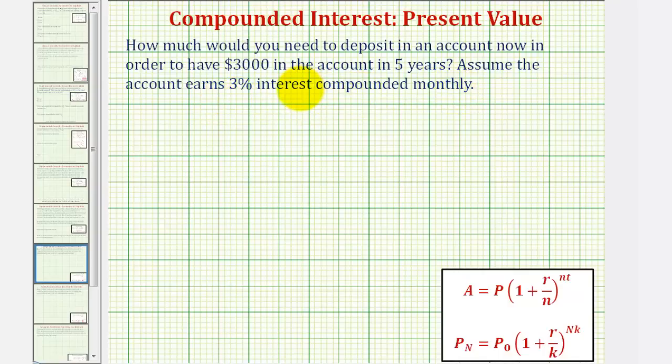We'll be using the compounded interest formula to solve this problem. If we take a look at these two formulas here below, they are equivalent but use different variables to represent the same quantities. This first formula is probably a more common compounded interest formula, but our textbook does use this form of the equation here.